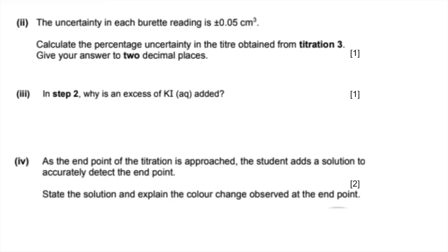The next part asks for the percentage uncertainty in titration three to two decimal places. Remember that a titre is based on two burette readings, so we have to double the error. We get 0.1 over the titre for titration three times 100, which is 0.46%.